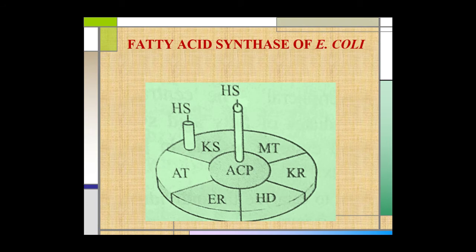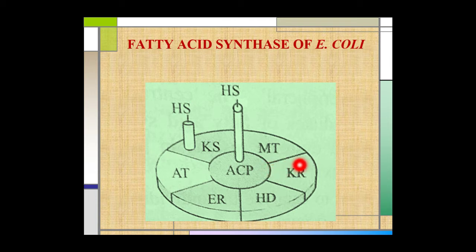Fatty acid synthase of E. coli. The fatty acid synthase enzyme complex of E. coli consists of seven separate polypeptide chains. These polypeptide chains are tightly associated in a single organized complex. The proteins act together to catalyze the formation of fatty acids from acetyl coenzyme A and malonyl coenzyme A.